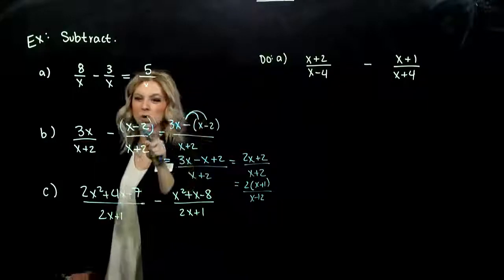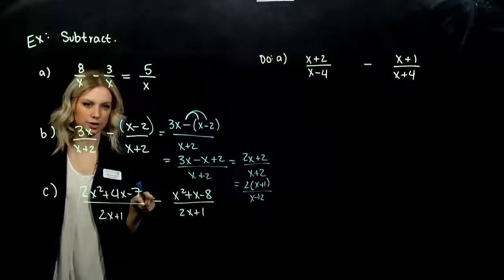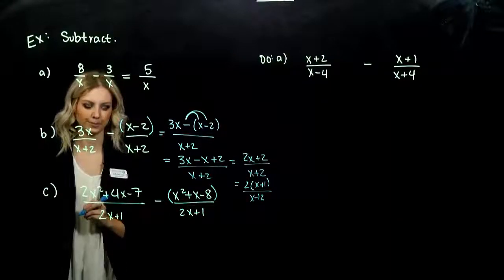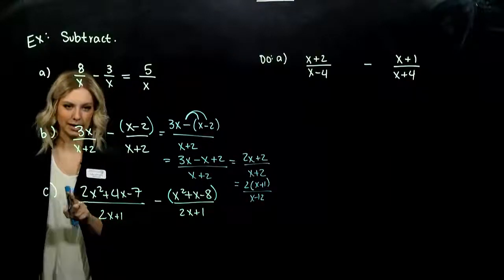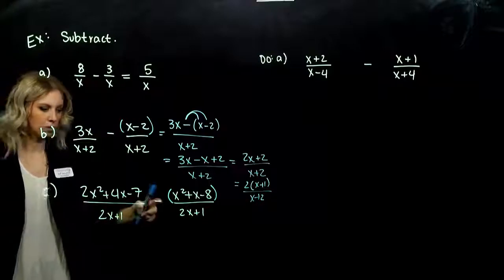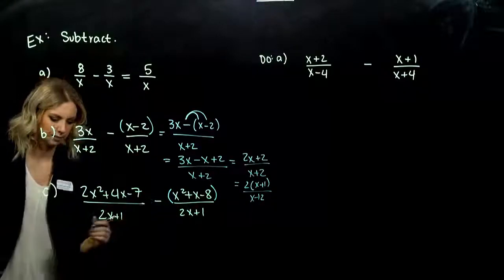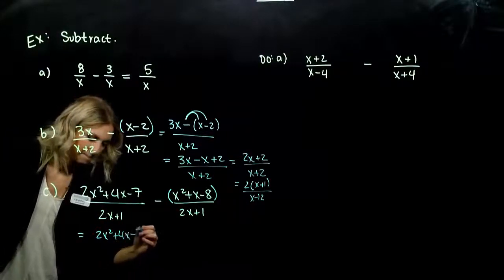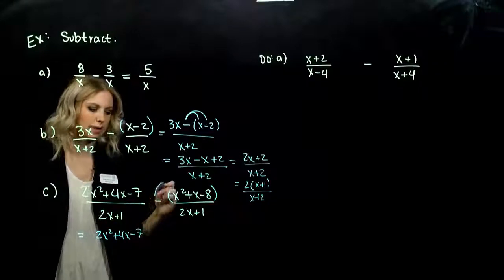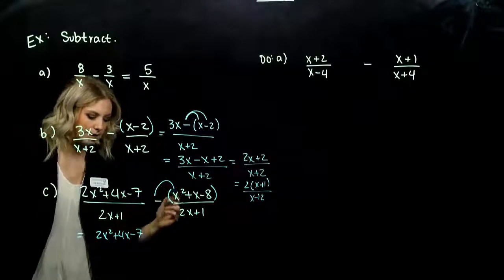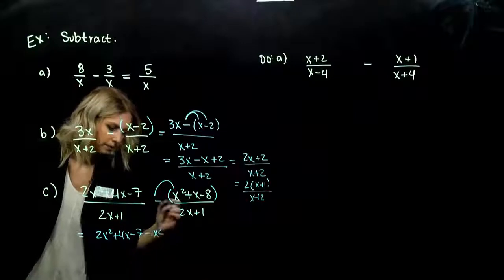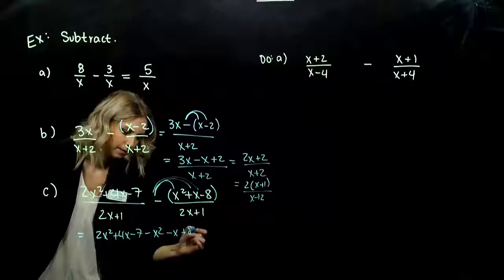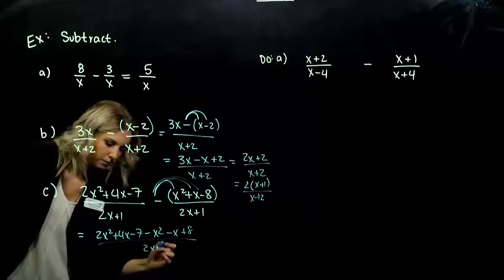It's very important to group together what comes together on that second term. Down below, what should we be doing here? Group together what comes together. On the front end, it doesn't matter since we don't have a negative out here — it's only in front of our second term. Up top we have 2x squared plus 4x minus 7, and distributing as we go: negative x squared, negative x, and positive 8, all over that same denominator, 2x plus 1.